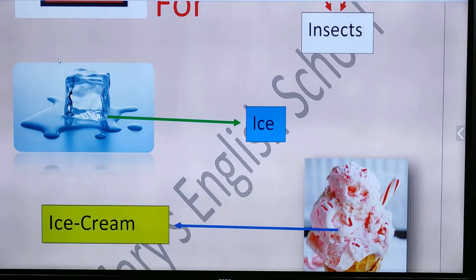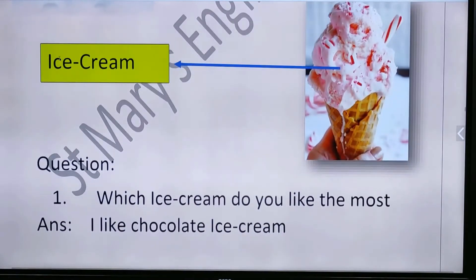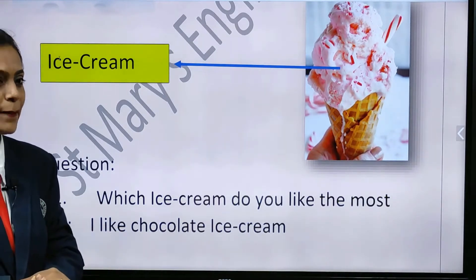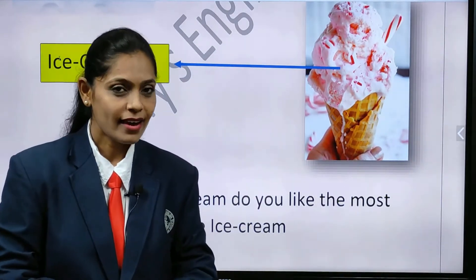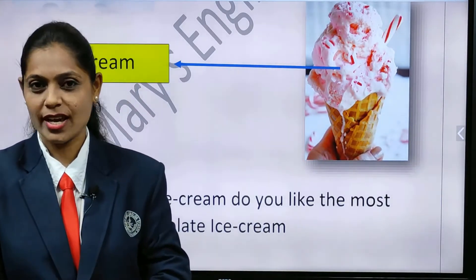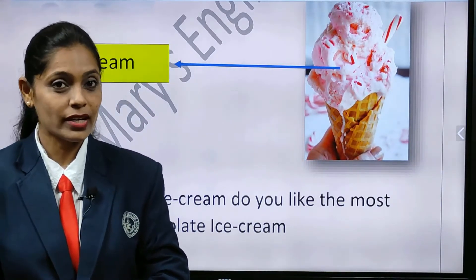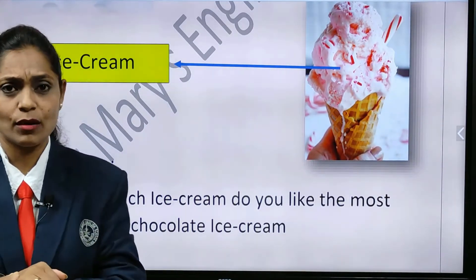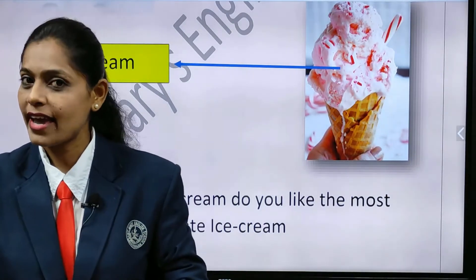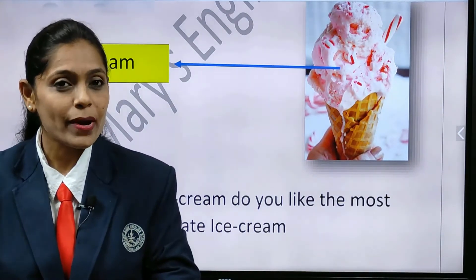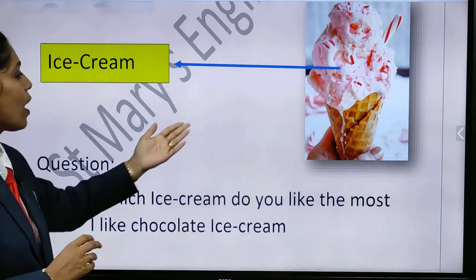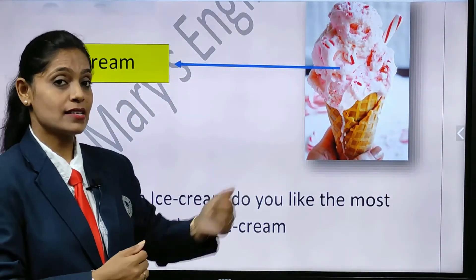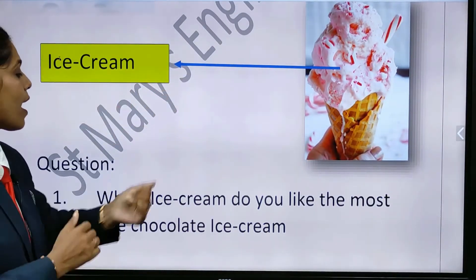And I am going to show you something. Yes, all are fond of it. What is that? Yes, this is also cold and yummy. What is that, children? Yes, it is ice cream! All of you like to eat ice cream, right? And how is the taste? Yummy, delicious. Now tell me, which flavor ice cream do you like to eat? Chocolate, vanilla, strawberry, mango. So I for ice cream. All of you repeat — I for ice cream. Once again — I for ice cream.